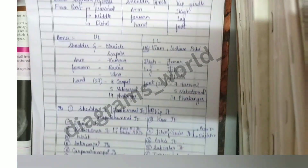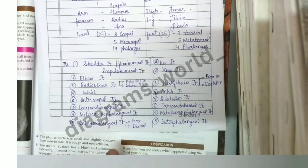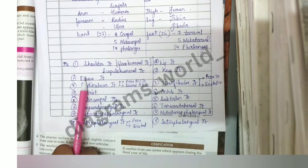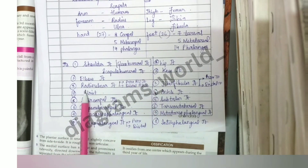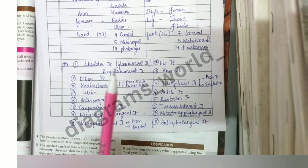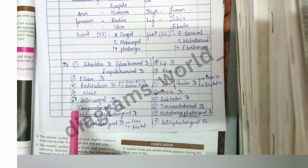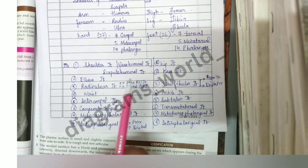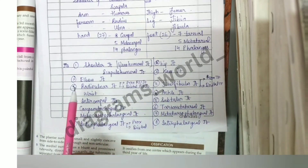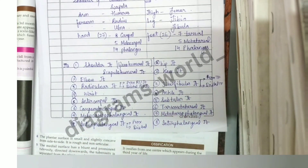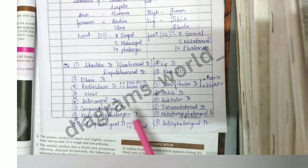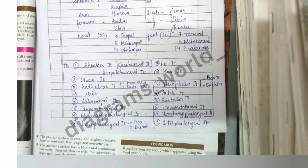Comparing the joints: the shoulder joint in the upper limb corresponds to the hip joint in the lower limb; the elbow joint corresponds to the knee joint; the radio-ulnar joints correspond to the tibiofibular joints; the wrist joint corresponds to the ankle joint; and all the joints of the hand correspond to the joints of the foot. The pattern of joints is the same throughout.